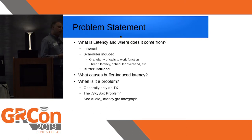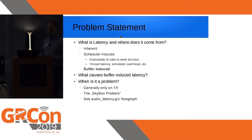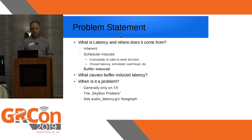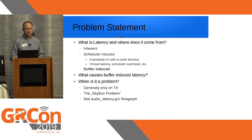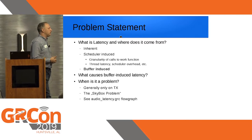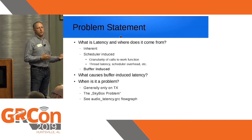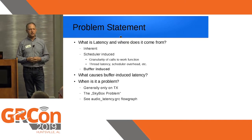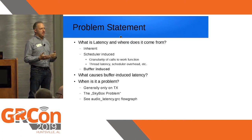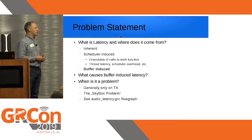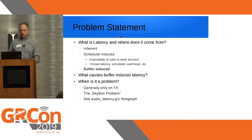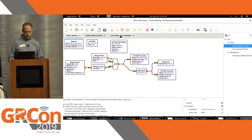What I'm really talking about in this talk is buffer-induced latency. This is, I think, the biggest problem we see in certain types of applications, specifically those that have continuous streaming. What really causes it and when is it a problem? First of all, this is generally only a TX problem, and it's most obvious when you're doing something relatively narrow-band. But it's always there — you just may not see it if you're not concerned about latency. I'll show a flow graph here to do a quick demonstration.